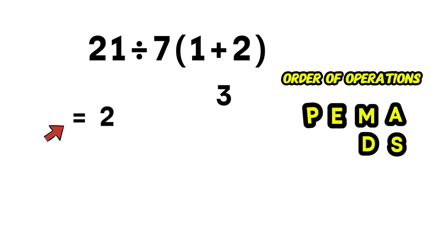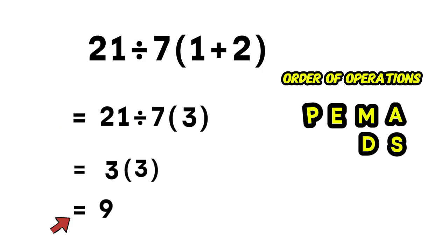Now the expression becomes 21 divided by 7 times 3. Next, we handle multiplication and division from left to right. 21 divided by 7 equals 3. Then 3 times 3 equals 9. And that gives us our correct final answer, 9.